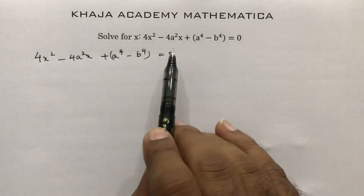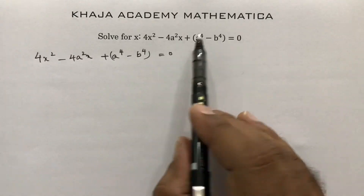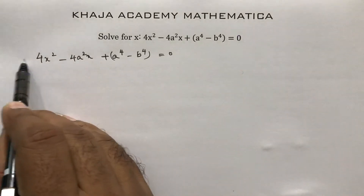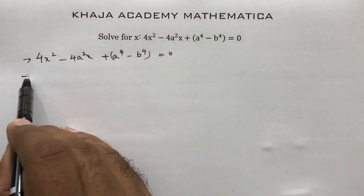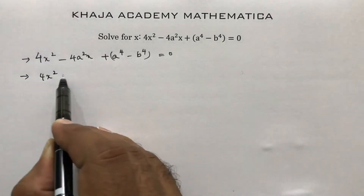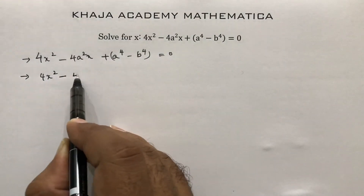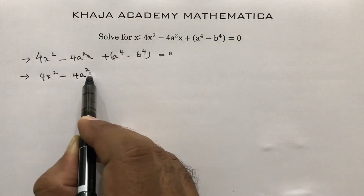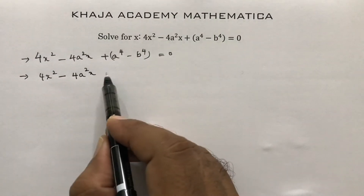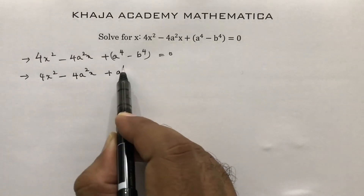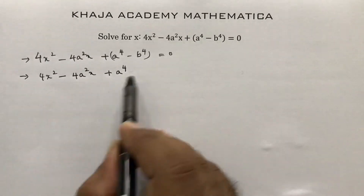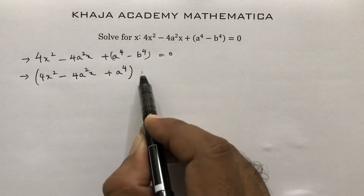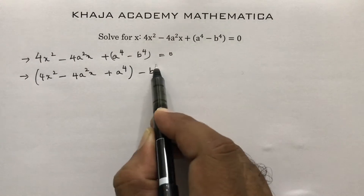We just need to rearrange — rearranging means grouping into brackets. First step: I will write it as (4x² - 4a²x + a⁴) minus b⁴.